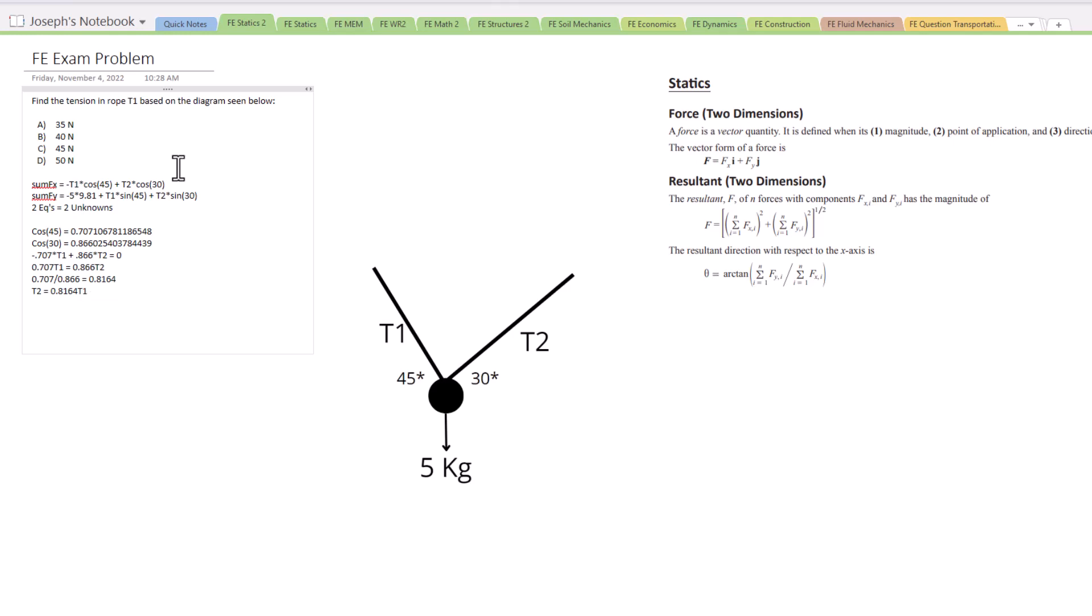So now we can take T2 out of the equation in the sum of the forces of the y direction equation. First we need to calculate negative 5 times 9.81. That's going to equal negative 49.05. We have negative 49.05.